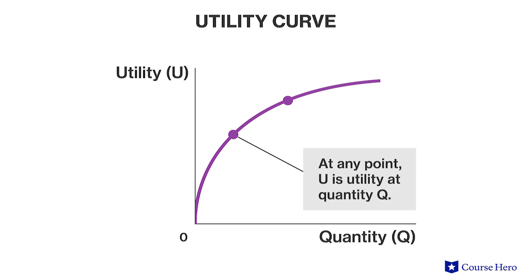In this particular curve, U represents total utility. So U1 is the utility experienced by consuming quantity Q1, and U2 is the total utility experienced by consuming quantity Q2.